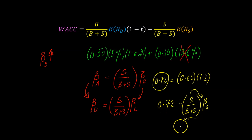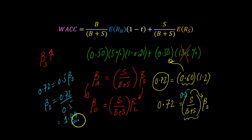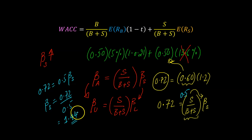If the firm's equity ratio changes from 60% to 50% — because debt is going up to 50% — then you're saying 0.72 equals 0.5 times the equity beta. You can solve this to find that equity beta equals 0.72 divided by 0.5, which gives an equity beta of 1.44. Notice this is higher than 1.2, which was the beta when the firm had 40% debt. This shouldn't surprise you — it's consistent with what we said: as debt goes up, equity becomes riskier, and equity beta goes up.